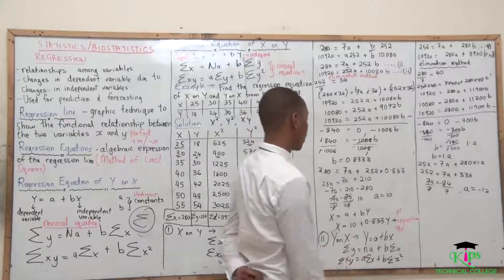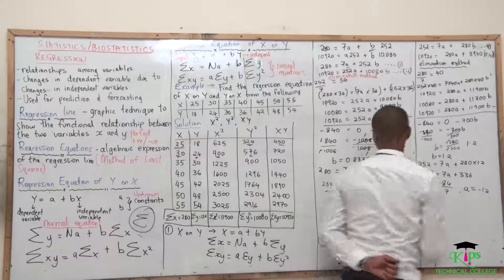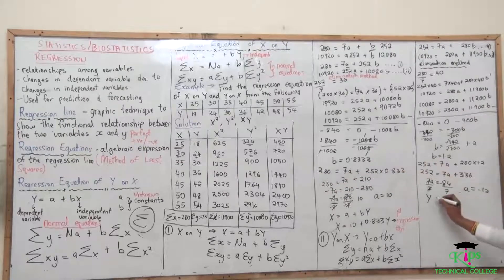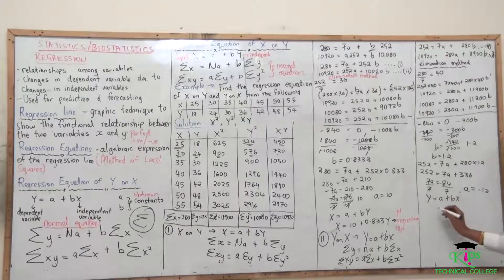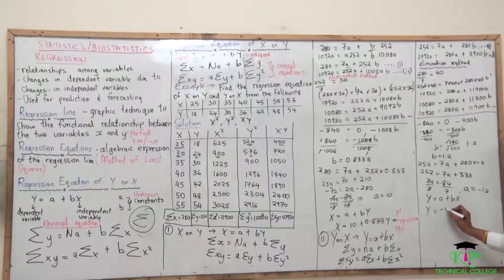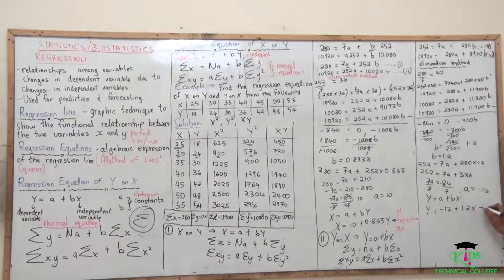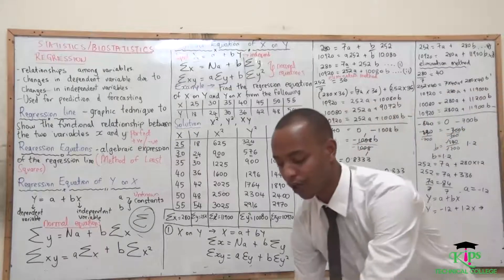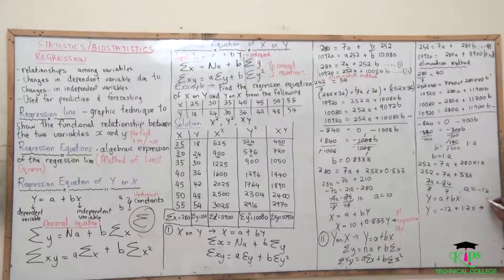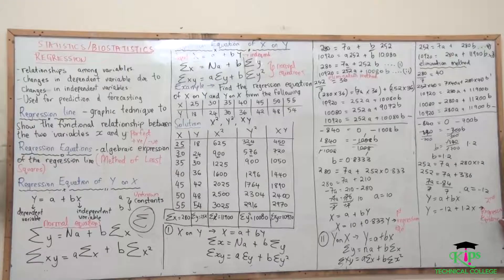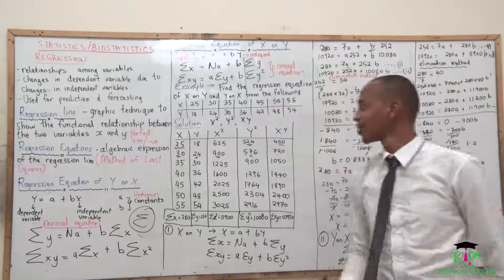Therefore, we come and substitute our values. Our regression equation of Y on X, where Y equals A plus BX, becomes Y equals negative 12 plus 1.2X. This gives us our second regression equation.